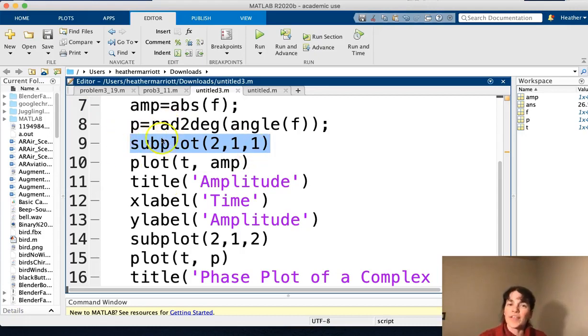So we're doing a subplot with two different columns, or one different column, two different rows. That's what these numbers stand for, the number of rows, the number of columns. So we've got our subplot, and in the first graph, the one on top, we're going to plot the time versus the amplitude.